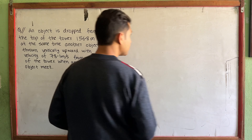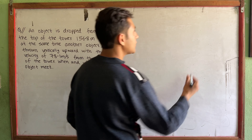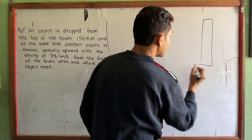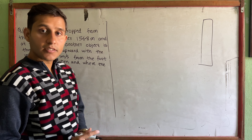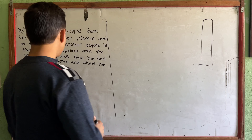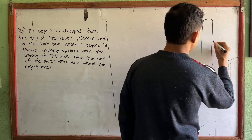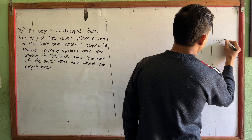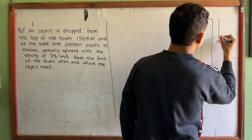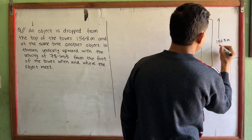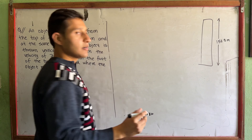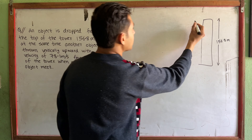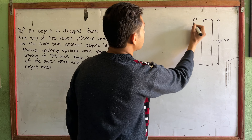So what is this? This is a tower. This height is 156.8 meters. So this is a ball and object — one dropped from the top, one thrown from the foot.